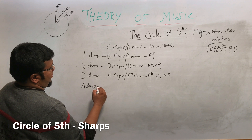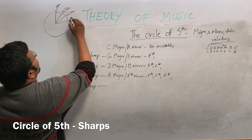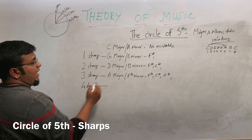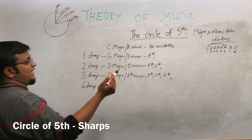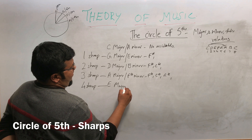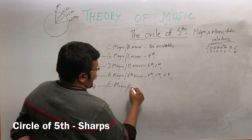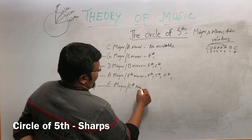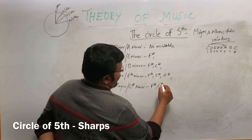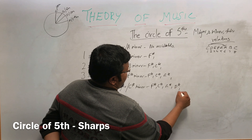Now the four-sharp scale. Counting from A: A, B, C, D, E — that is E major. E major relates to C-sharp minor. The sharps are A, F, C, G, D.